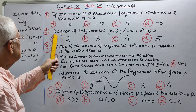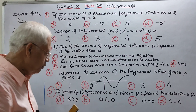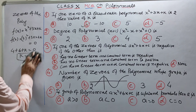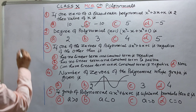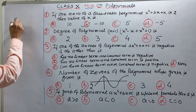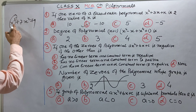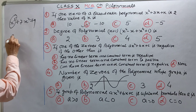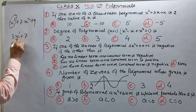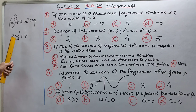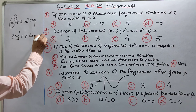Second question: degree of polynomial kitna hoga? Degree ka matlab apne padha hai — highest power of x. For example, x power 5 plus 7x square plus 9 — degree kitni hogi? 5, kyunki x ki power 5 hai. 3x square, x plus 7 — degree kitni hogi? 1, kyunki x ki power 1 hai. Isko kya kehte hain? Linear polynomial.